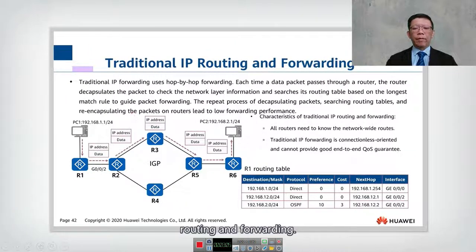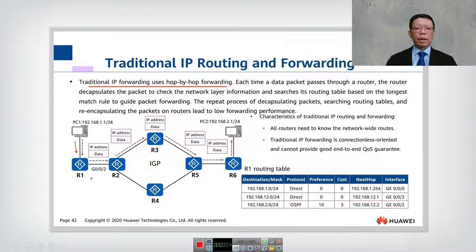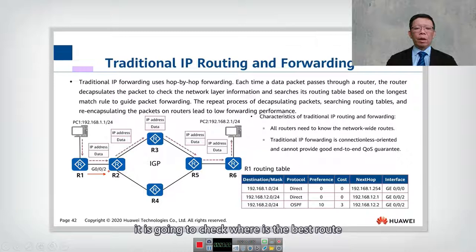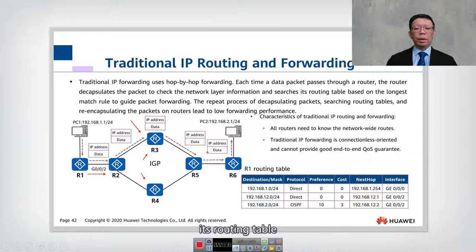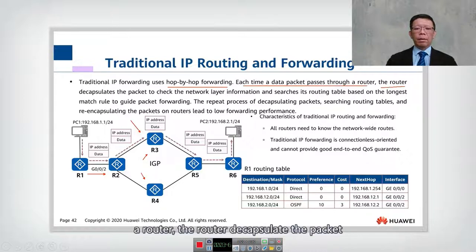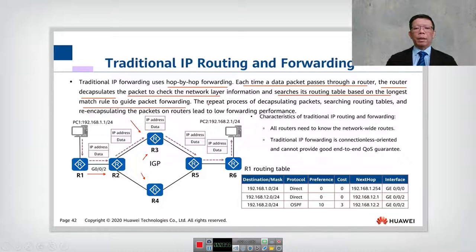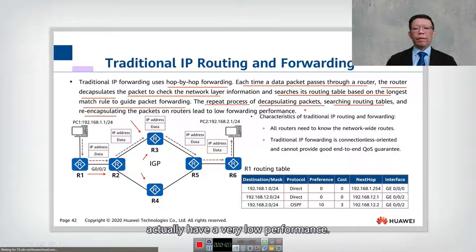Let's look into traditional IP routing and forwarding. Traditional IP uses hop-by-hop forwarding. When a packet goes into the gateway — R1 in this case — R1 looks up the destination address in its routing table and forwards to R2. R2 then checks where the best route is to reach the destination; it could be R3 or R4, but based on the routing table R3 is preferred, so it forwards to R3, which then forwards to R5. Each time a data packet passes through a router, the router decapsulates the packet, checks the network layer, searches the routing table using longest match, then re-encapsulates — this repeated process results in very low performance.